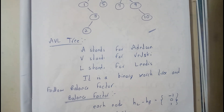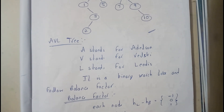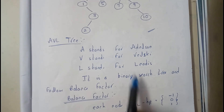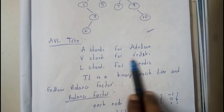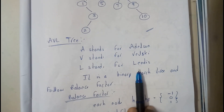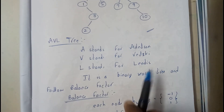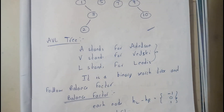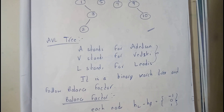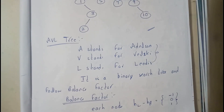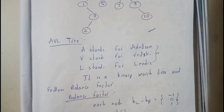Hello guys, we are back with our next tutorial. In this tutorial let's see all about AVL tree. Basically A stands for Adelson, V stands for Velsky, and L stands for Landis. I hope everyone got a small idea on those three scientist names, because that's one of the most important things you need to remember.